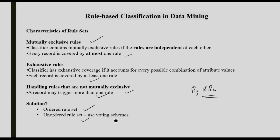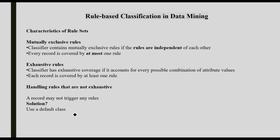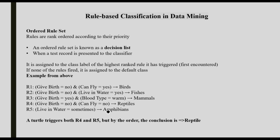We normally use an ordered rule set. An ordered rule set handles cases where rules are not mutually exclusive. If no rule is triggered for a record — for example, the dogfish shark case — we use a default class. We need to mention a default class when using an ordered rule set. The solution — the ordered rule set — is also known as a Decision List.